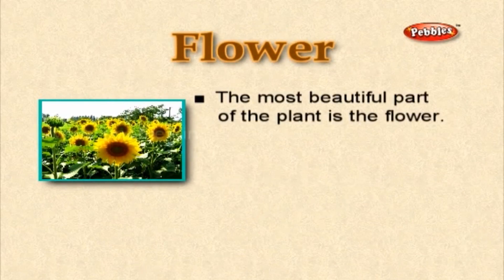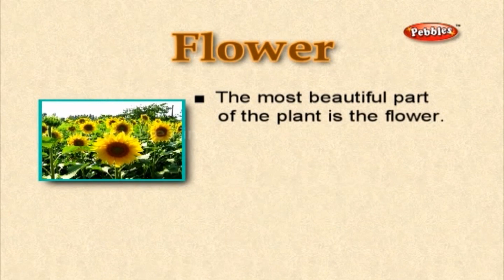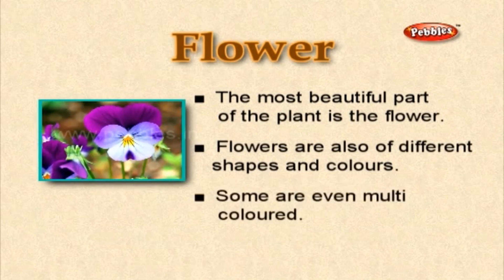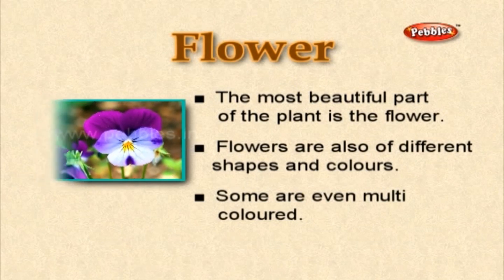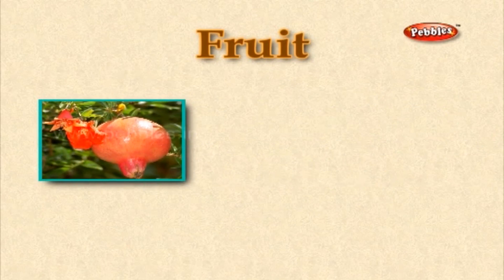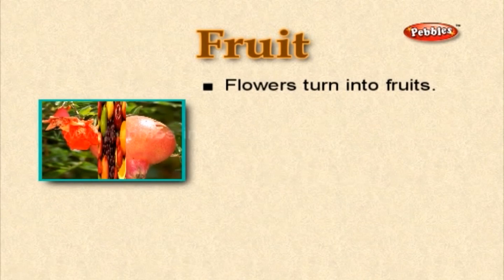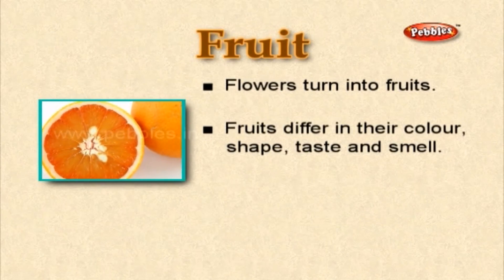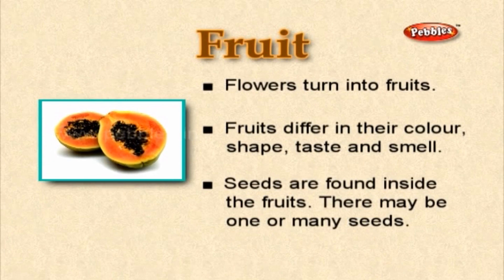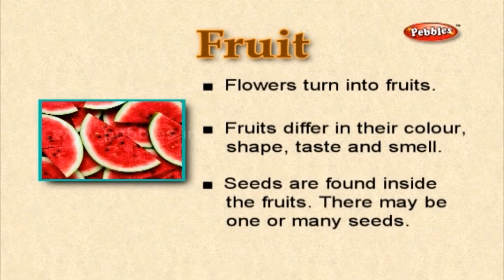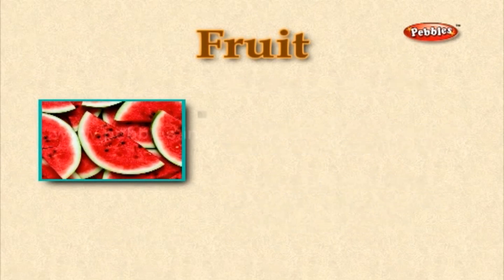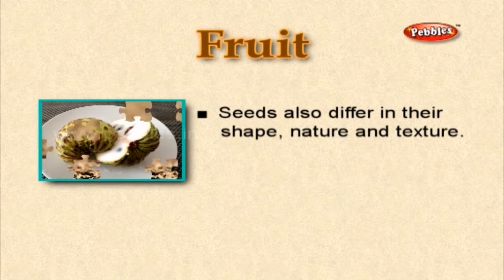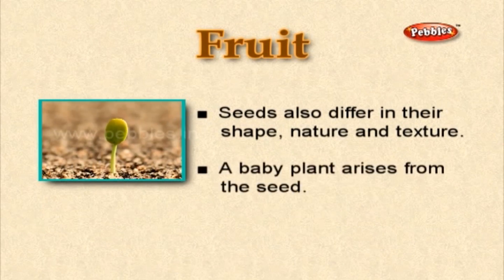The flower is the most beautiful part of the plant. Flowers are of different shapes and colors; some are even multicolored. Flowers turn into fruits. Fruits differ in their color, shape, taste, and smell. Seeds are found inside the fruits — there may be one or many seeds. Seeds differ in their shape, nature, and texture. A baby plant arises from the seed.